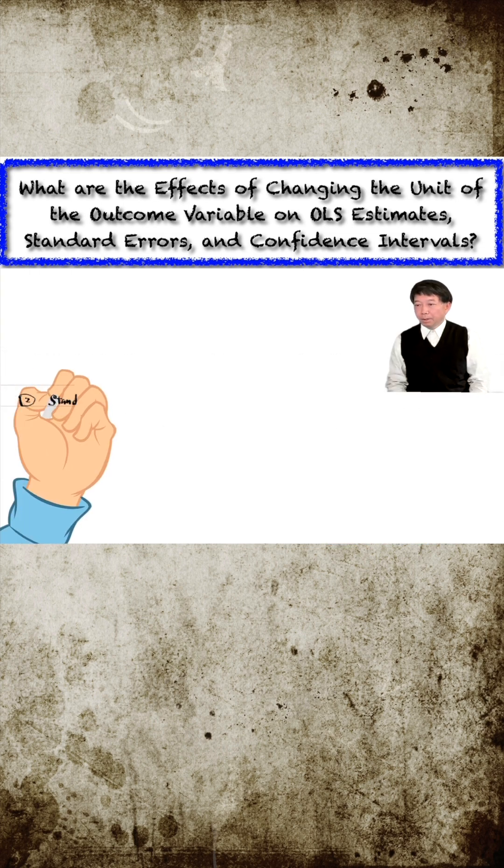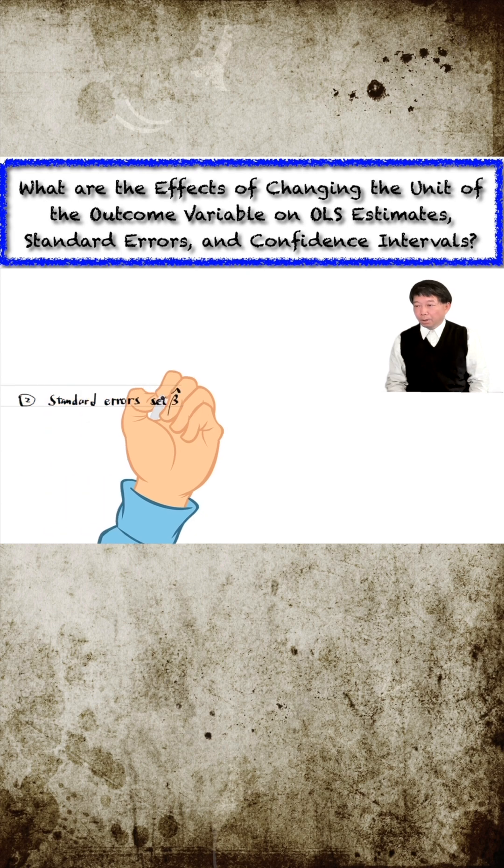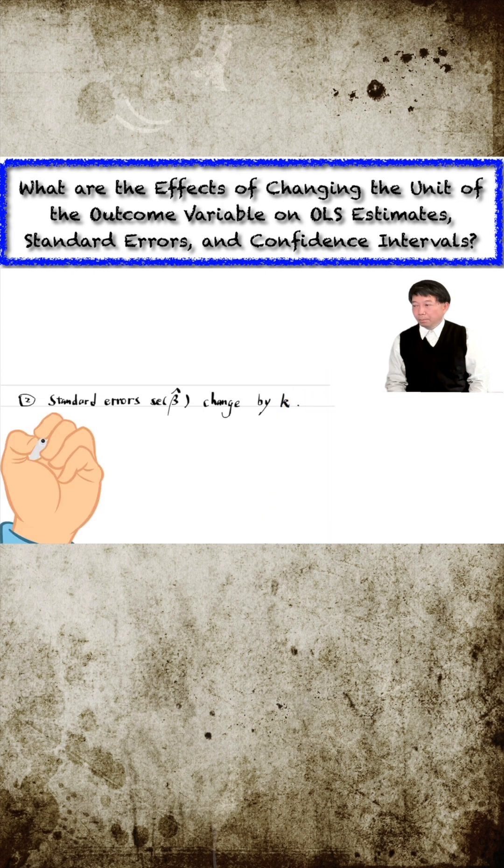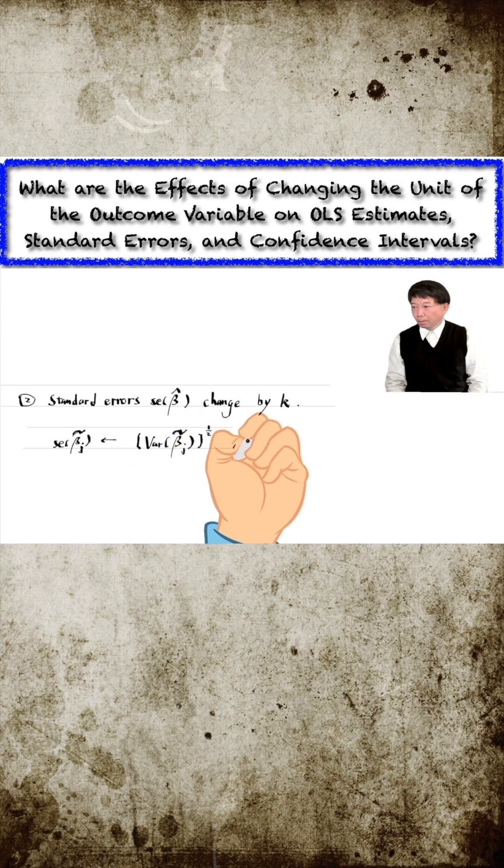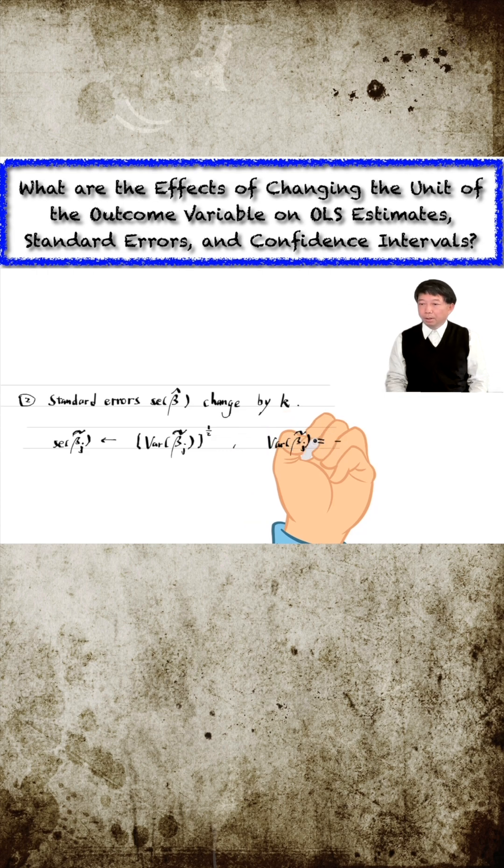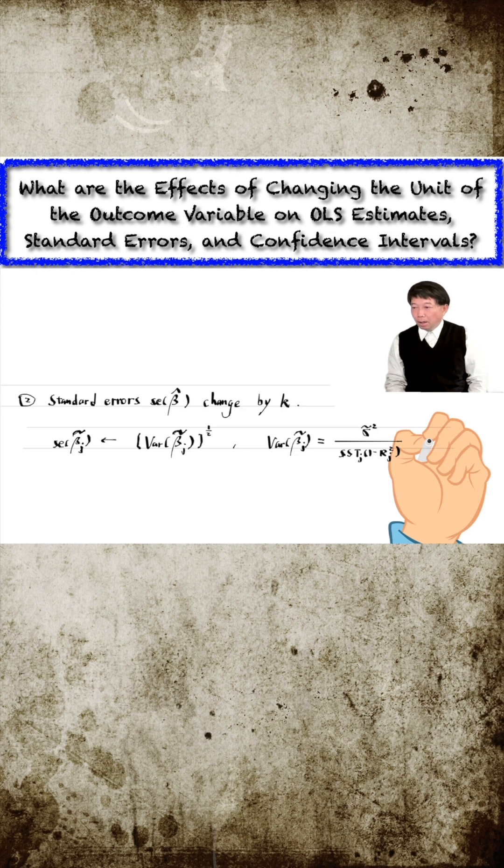The second conclusion is that the standard errors of the new OLS estimates also change by the scale k. We know that the standard error is estimated by the square root of the variance of the estimate, where the variance of the estimate equals the error variance divided by the sample variation of xj and the R squared from regressing xj on all other explanatory variables.